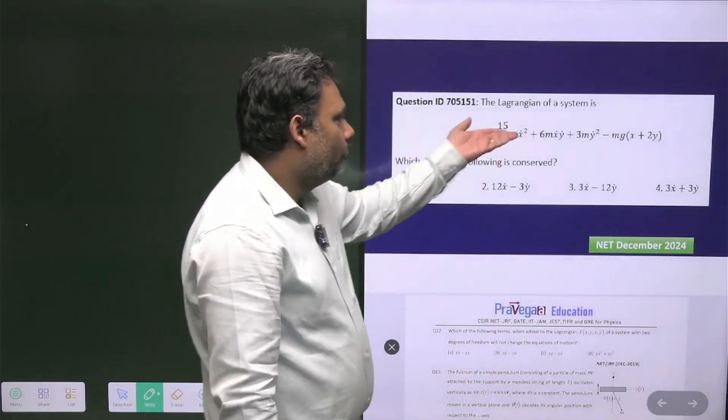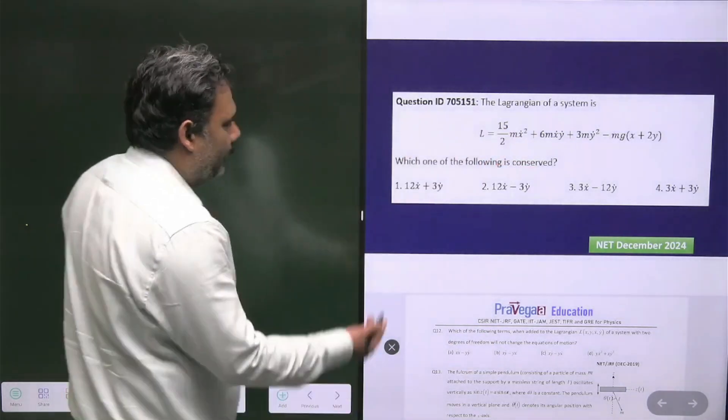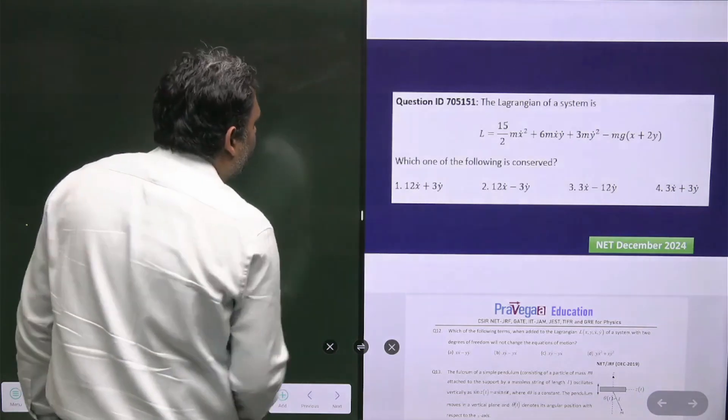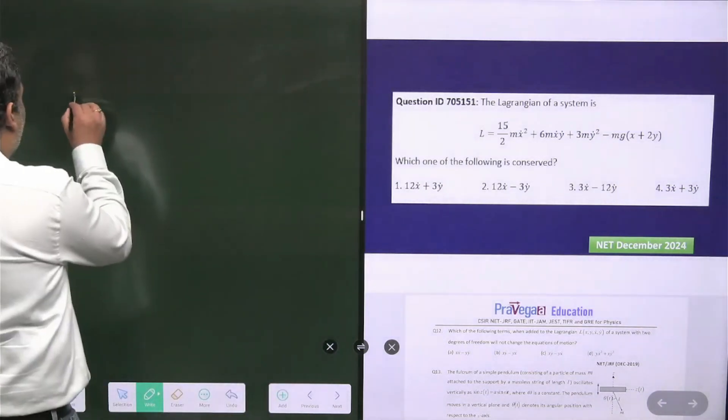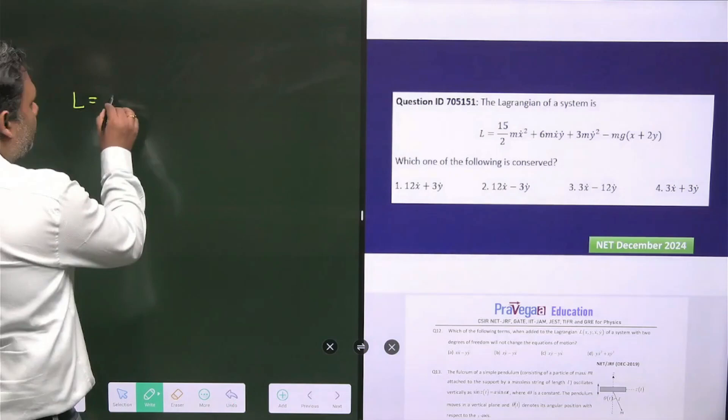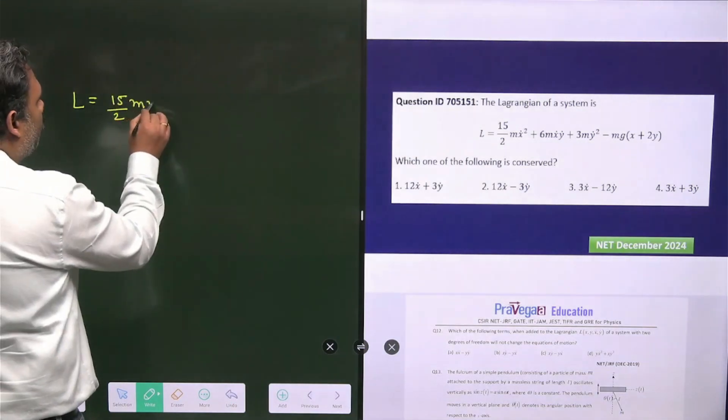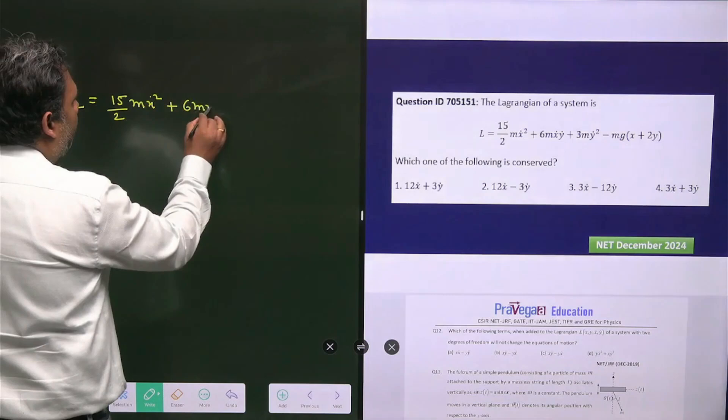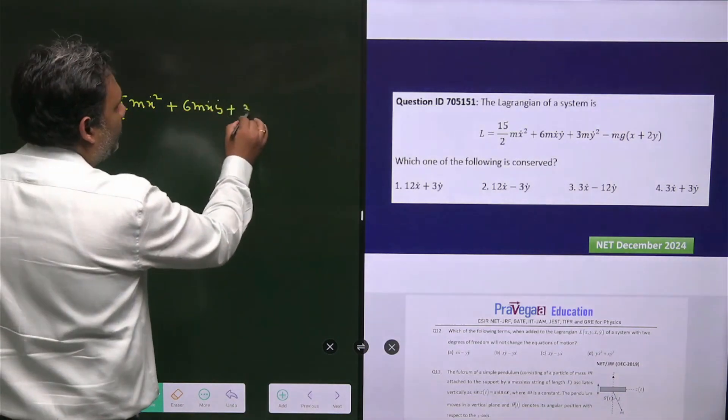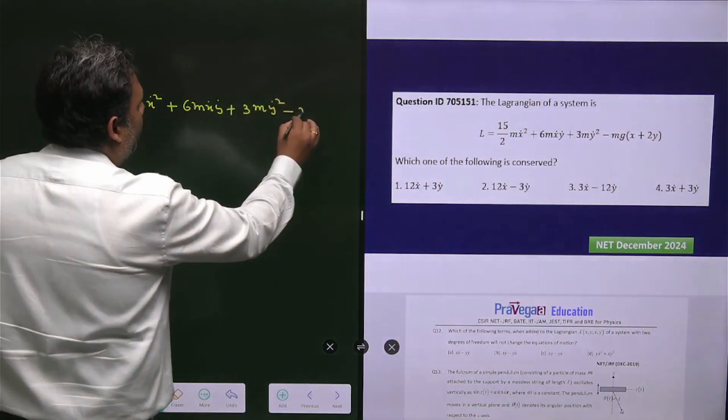But if you're encountering this type of question for the first time, then obviously it's tough. Let's go for the complete solution. The Lagrangian is given by (15/2)mẋ² + 6mẋẏ + 3mẏ² - mgx + 2mgy.